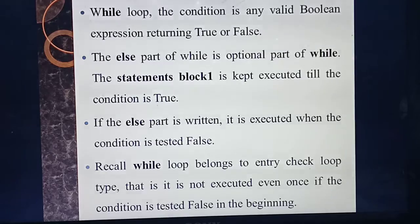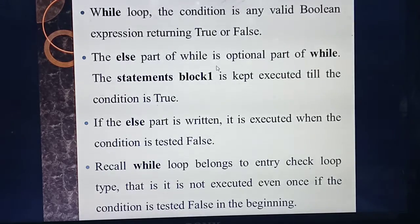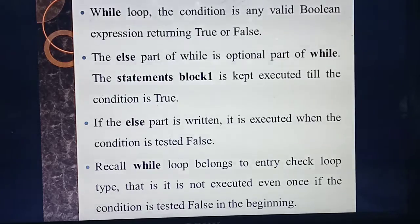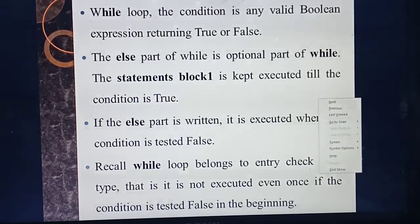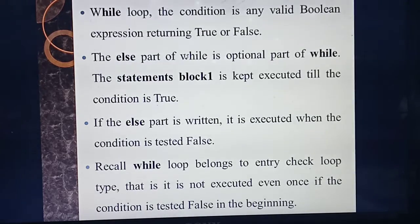The while loop always gives output as a boolean value — either True or False. An important note: in the while loop, the `else` part is optional. When does the else execute? Once your condition gets false, the else part will execute. We also call the while loop an entry check loop, because you give the condition at the entry — the starting — of the program, as seen in the flowchart.